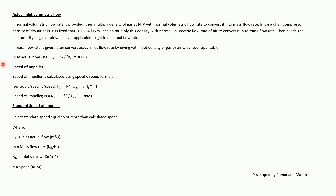The speed of the impeller is calculated using the specific speed formula. Isentropic specific speed: Ns = N × Q_in^0.5 / HS^0.75. Therefore, impeller speed N = Ns × HS^0.75 / Q_in^0.5. Select the standard speed equal to or greater than the calculated speed. Here, Q_in is actual inlet flow in m³/s, M is mass flow rate in kg/hr, Rd1 is inlet density in kg/m³, and N is in RPM.